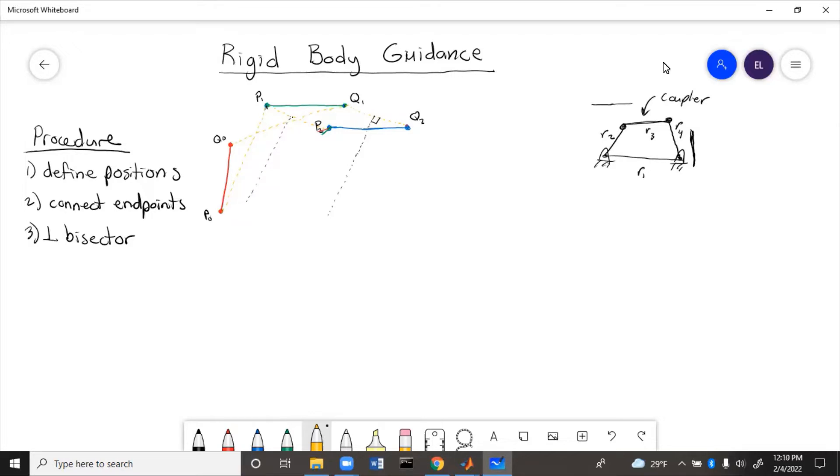Then we need to draw the perpendicular bisectors from those lines. So Q0 to Q1, go to the middle, come out perpendicularly, and then P0 to P1, we go to the middle, we come out perpendicularly.